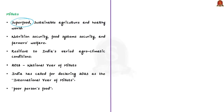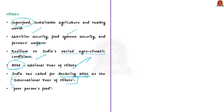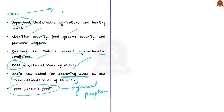Millets are often referred to as superfoods because of their nutrition content, and their production can be seen as an approach for sustainable growth and a healthy world. Apart from nutrition, they have multi-dimensional benefits — addressing nutrition security, food system security, and farmers' welfare. Many unique features make them resilient to India's varied agro-climatic conditions. The year 2018 was declared as the National Year of Millets, and India has called for declaring 2023 as the International Year of Millets. Despite acknowledging their significance, there is a general perception that millets are poor people's food, so it is necessary to rebrand them as nutri-cereals and promote their production and consumption.